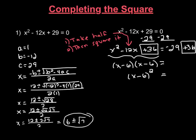Whenever you do completing the square, whenever you take half of a number and then square it, you'll always wind up with a trinomial that gives you a repetitive factor like this. Now on the other side of the equation, just combine your like terms. Negative 29 plus 36 is positive 7, so let's bring down a 7.